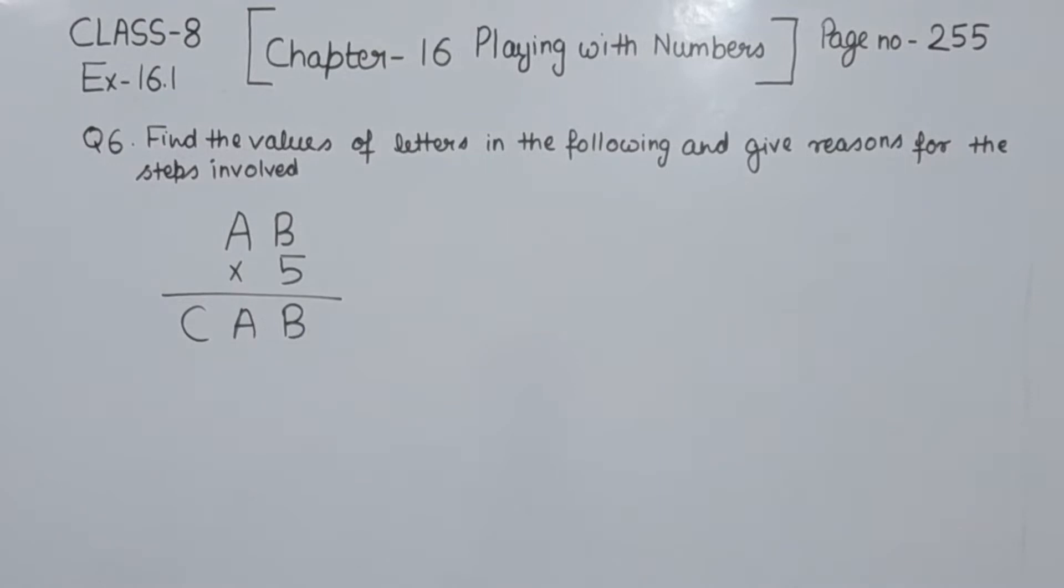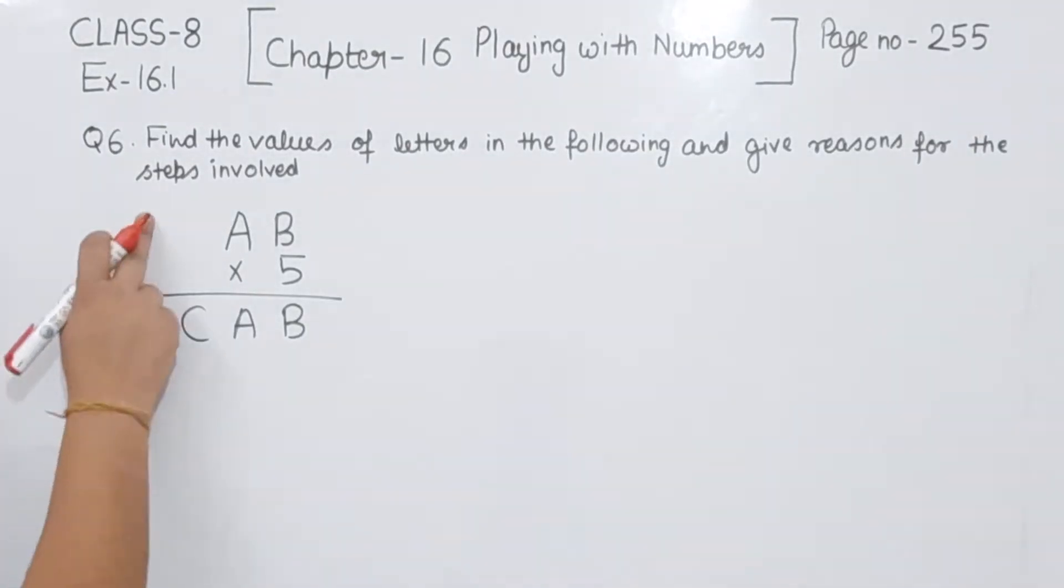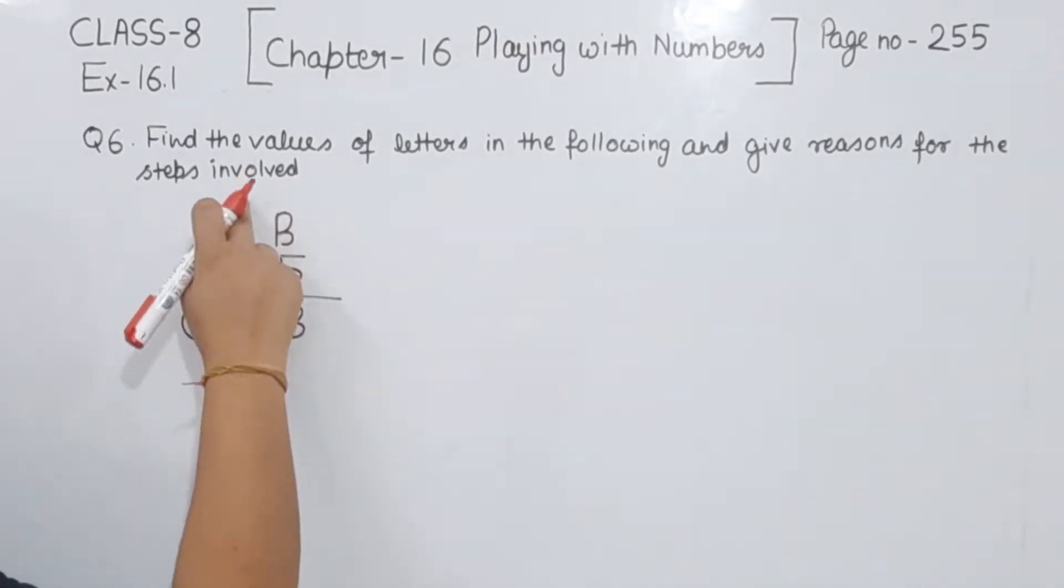Find the value of letters in the following and give reason for the steps involved. We have A multiply by B, AB multiplied by 5, and we are having the value as CAB. That means these two numbers and these two numbers should be the same.